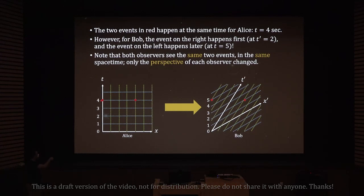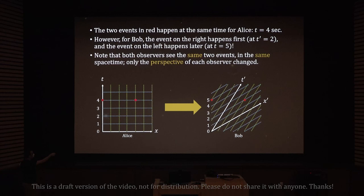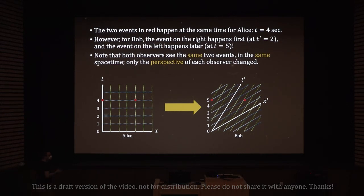I have two events marked here in red. We call these events because they happen at a certain place at a certain time. This event for Alice happens at x equals zero and t equals four. The two events in red happen at the same time for Alice — both happen at t equals four seconds. This blue line is the line of constant time t equals four, and both points are on this line, so both events happen at the same time according to Alice.